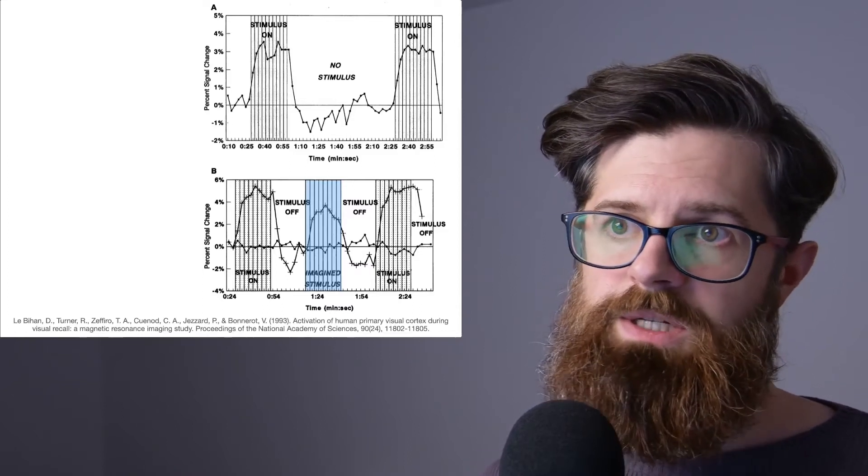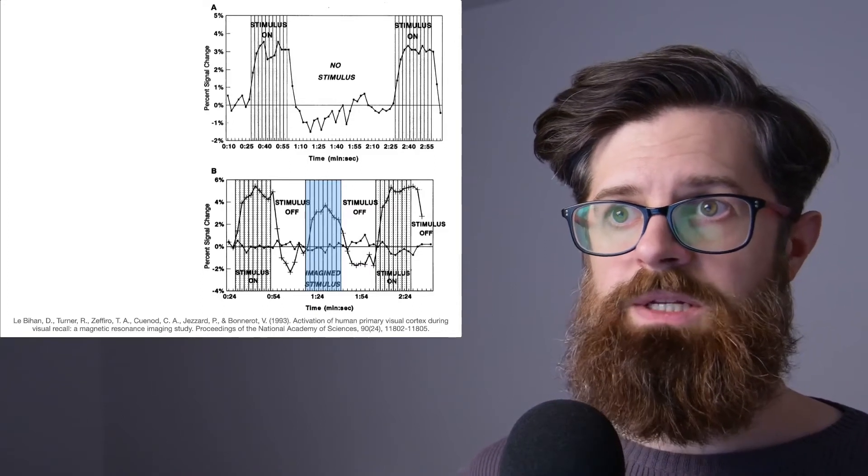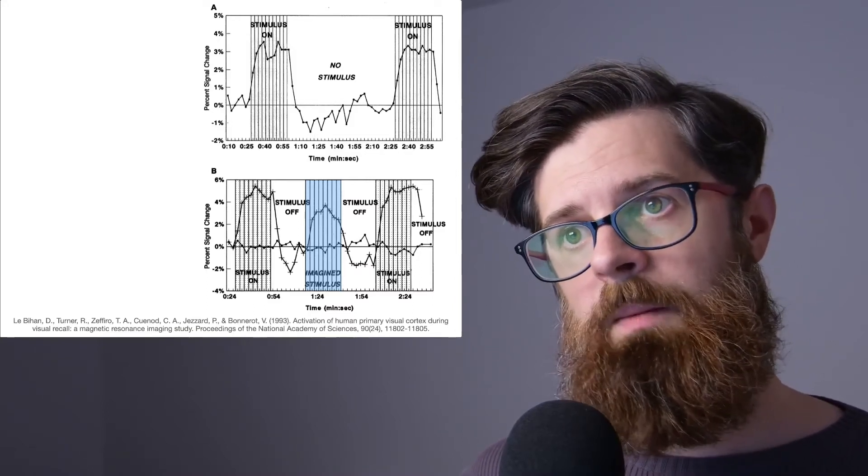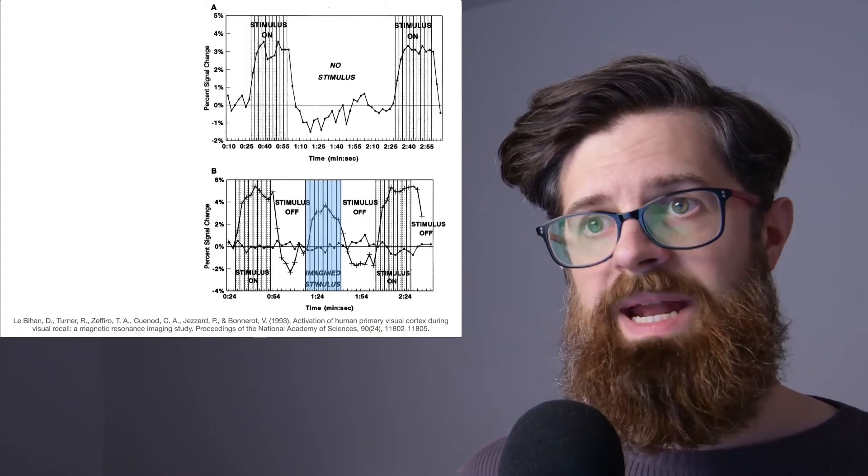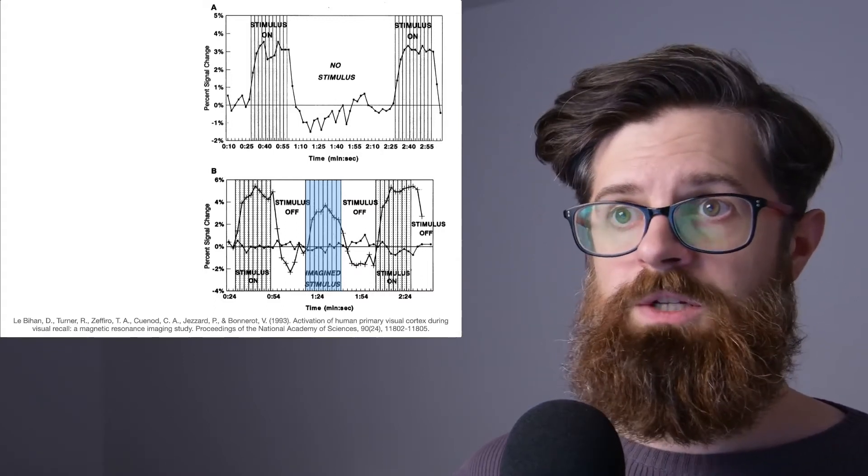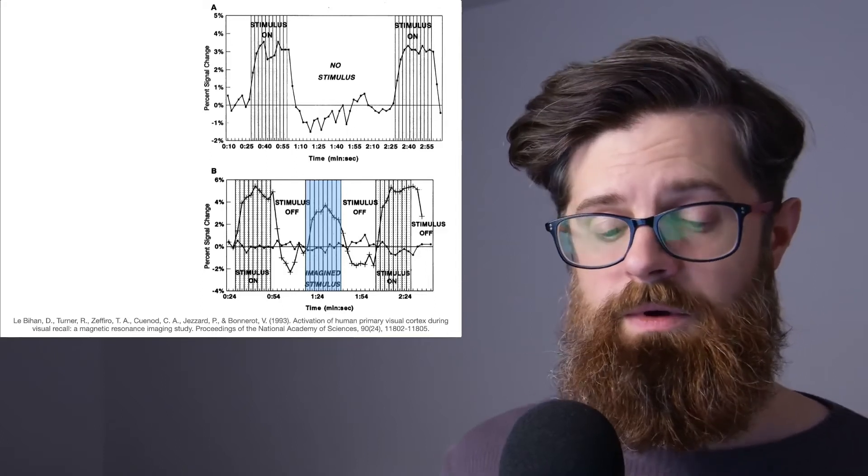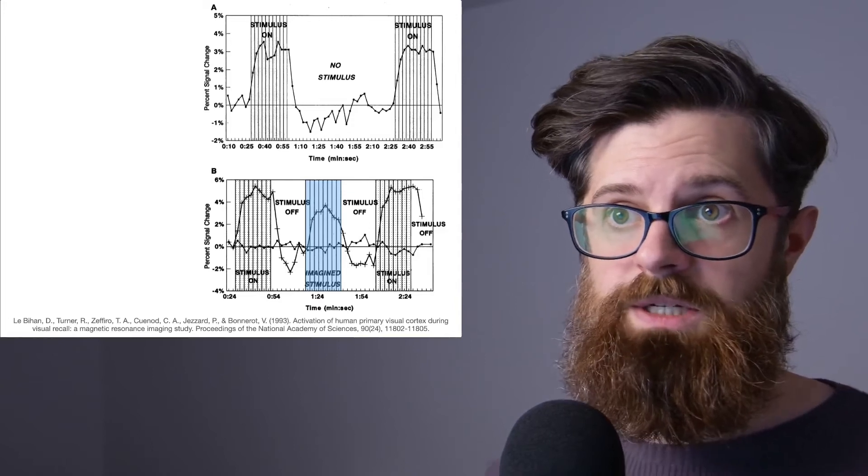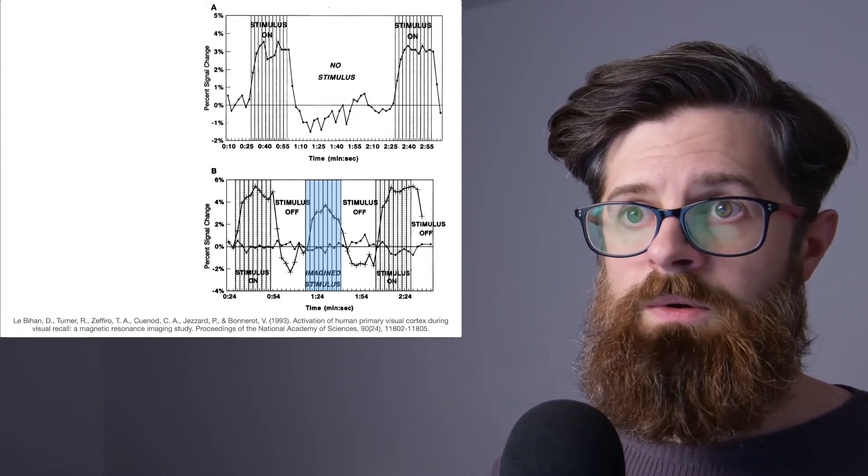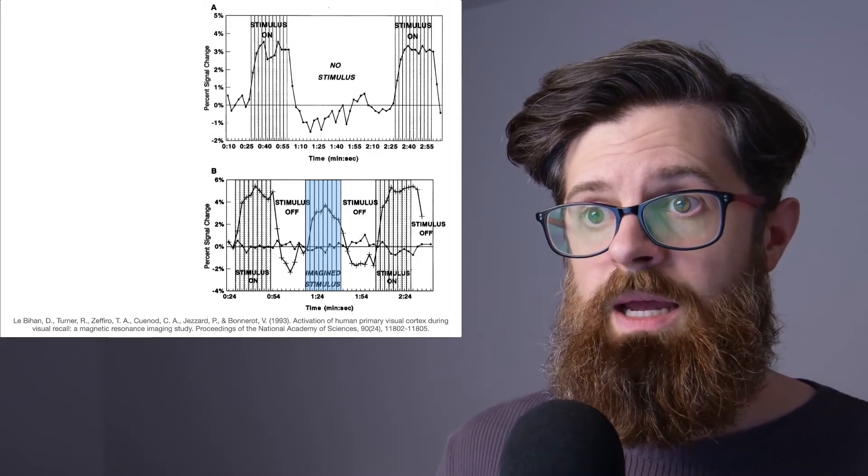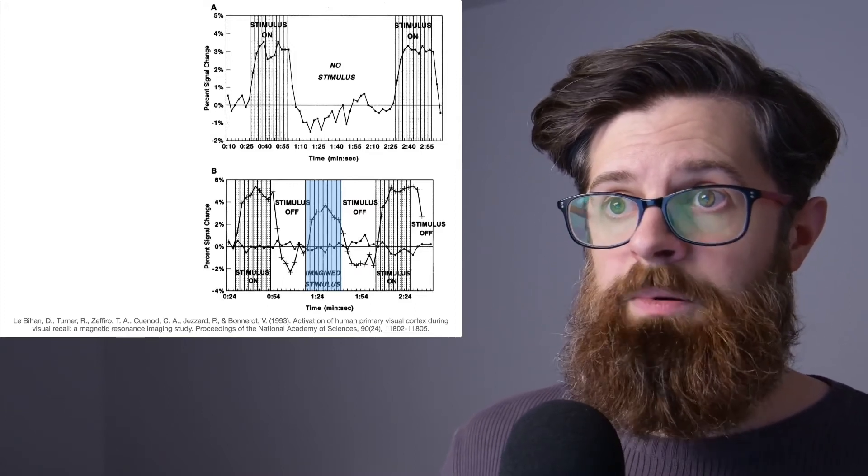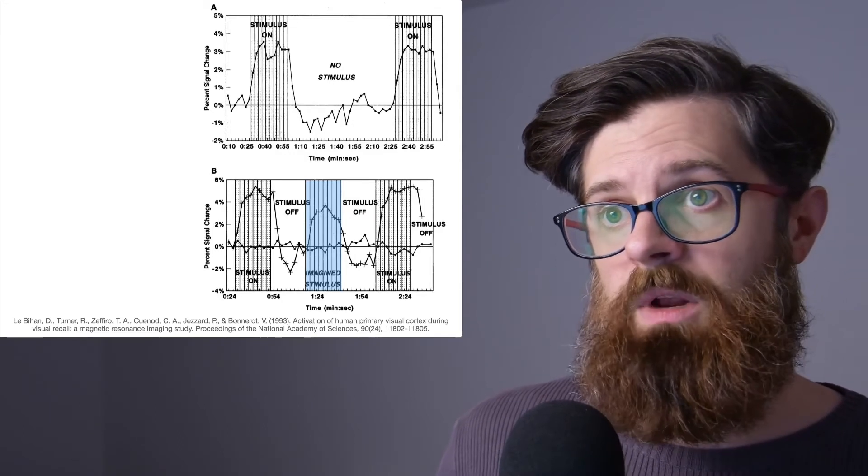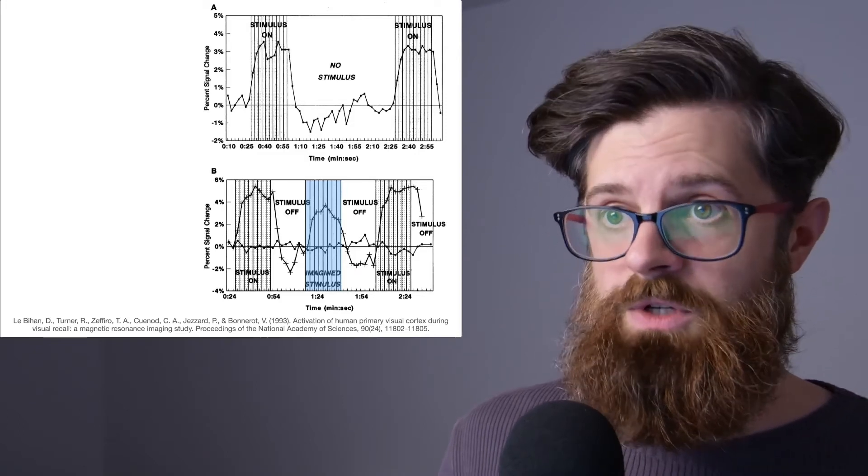When the stimulus then disappeared, we can see that the activity in the primary visual cortex decreased to hover roughly around zero. But then again when the stimulus was shown, the fMRI activity in the primary visual cortex increased. So on its own this is not really very interesting - it basically shows what happens in the primary visual cortex when you show someone a visual stimulus, and the answer is the activity goes up.